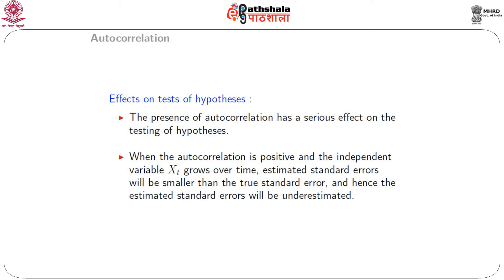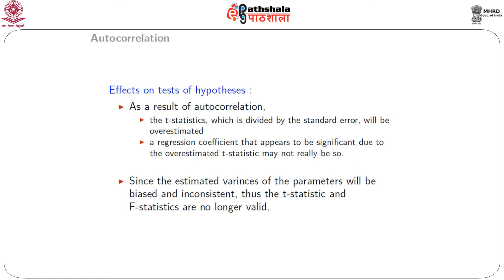The effects of autocorrelation on hypothesis testing are also serious. When autocorrelation is positive and X_t grows over time, the estimated standard errors will be smaller than the true standard errors — that is, they will be underestimated. As a result, the t-statistics, which are divided by the standard error, will be overestimated. A regression coefficient that appears significant due to the overestimated t-statistic may not really be so. Since the estimated variances of parameters will be biased and inconsistent, the t-statistics and F-statistics are no longer valid.